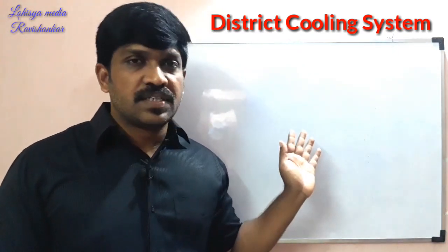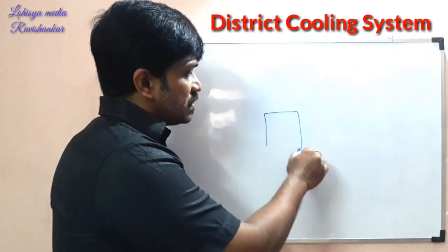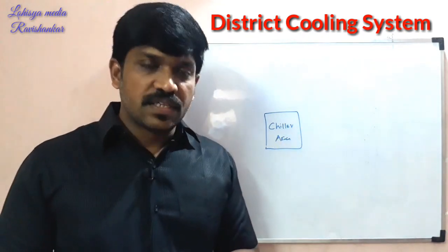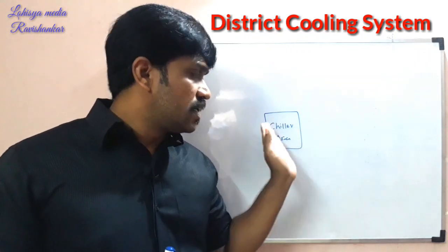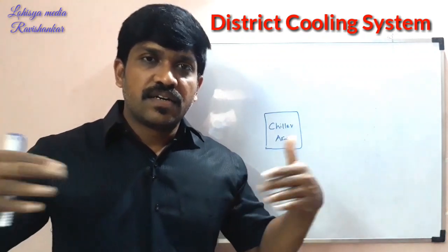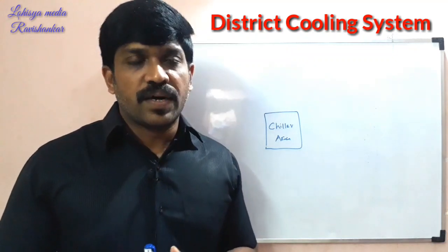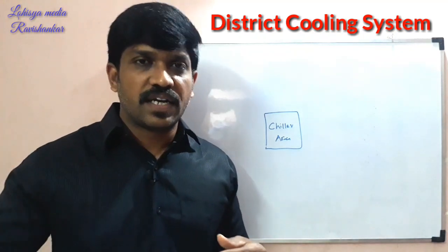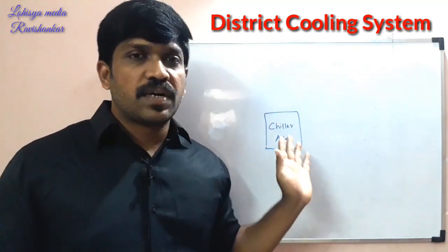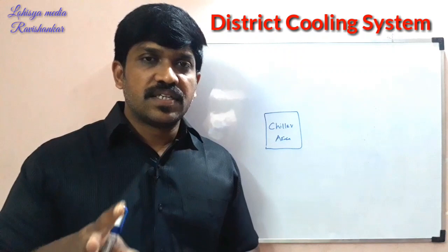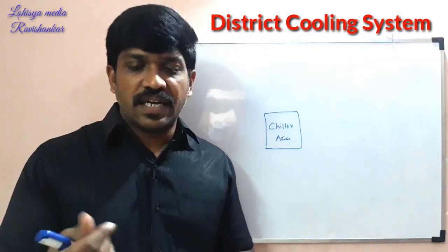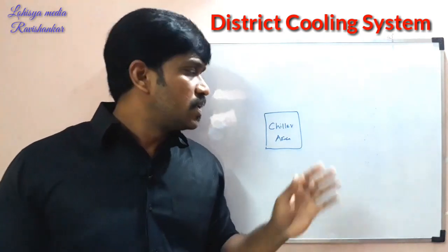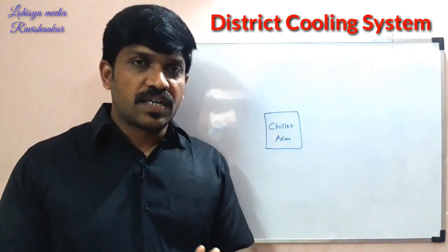How does this work? First of all, in the district cooling system, you use a chilled water system area. This is a chilled water system. When you use a chilled water system and have the energy area, heat is distributed. In the summertime, we generate the chilled water and distribute the chilled water.